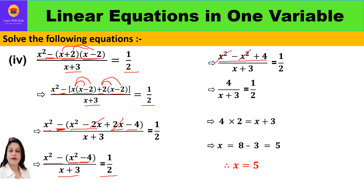Minus 4 becomes plus 4. Then x² minus x² cancels, so we get 4 upon (x plus 3) equal to 1/2. Now cross multiply: 4 times 2 equals x plus 3. So x equals 8 minus 3, which equals 5. The value of x is 5.